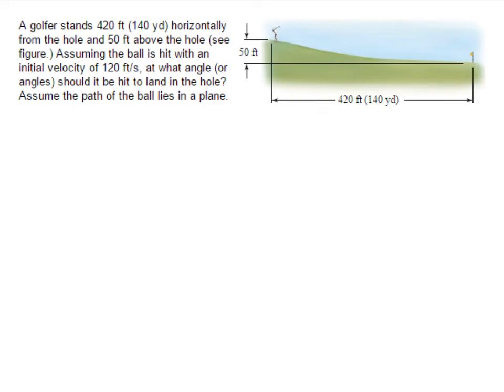So what we're envisioning here is a path that the ball will trace out that's going to look a little something like this. It's going to go up into the air and then come back down and land in that hole. And what we're looking for is the initial angle with which the ball should be hit. So if we think of this sort of tangent line here with the horizontal, that angle alpha is what we're looking for.